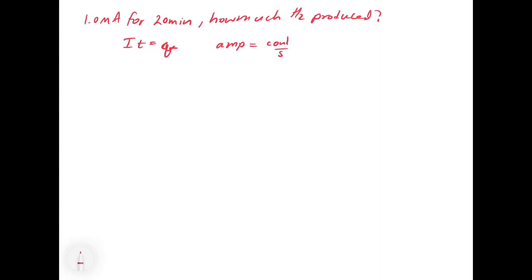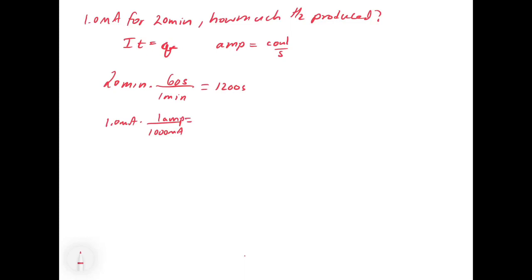So let's work through this. We have 1,200 seconds and 0.001 amps. Using I times T equals Q: 1,200 seconds times 0.001 amps gives us a charge equal to 1.2 coulombs.